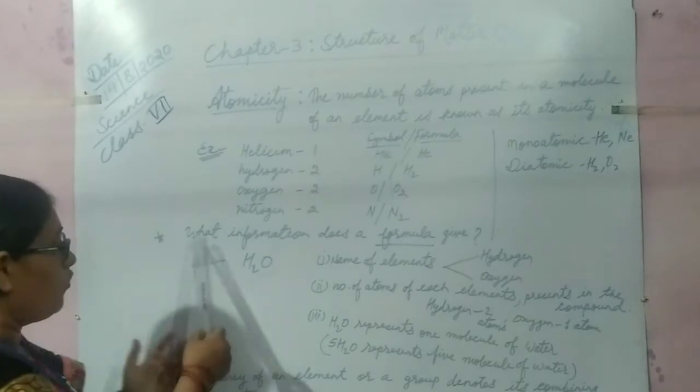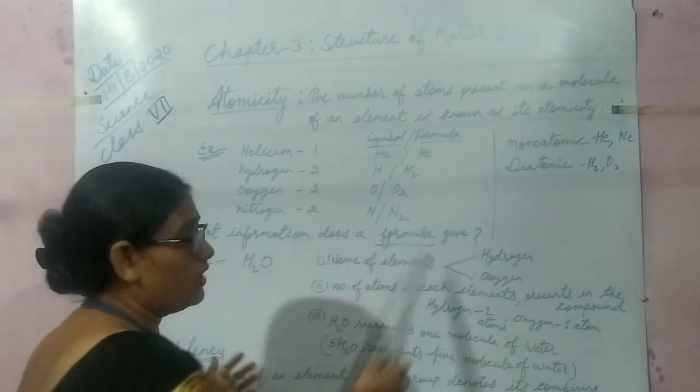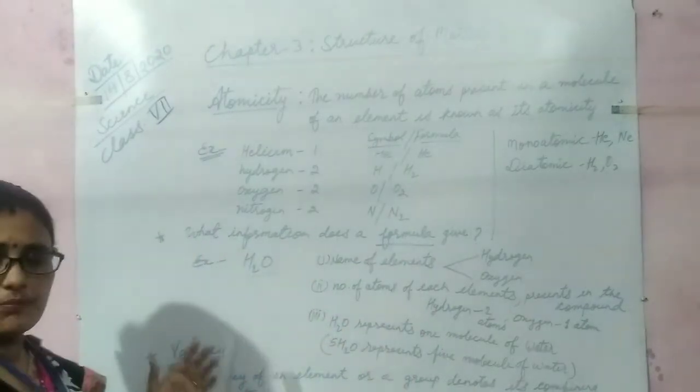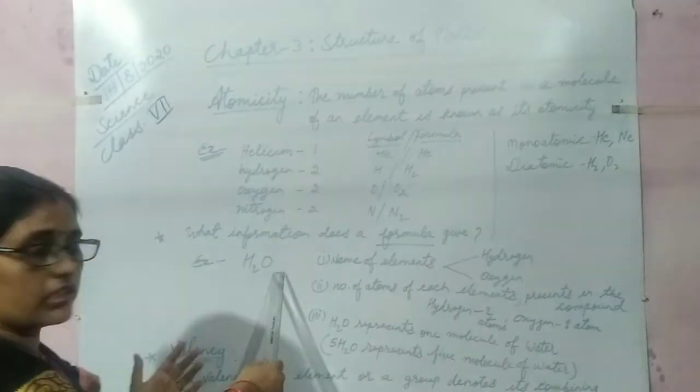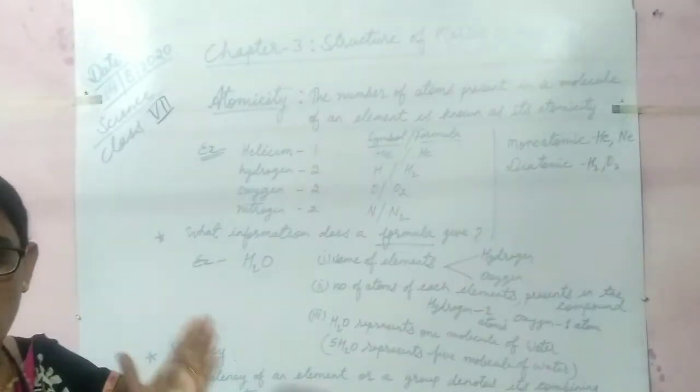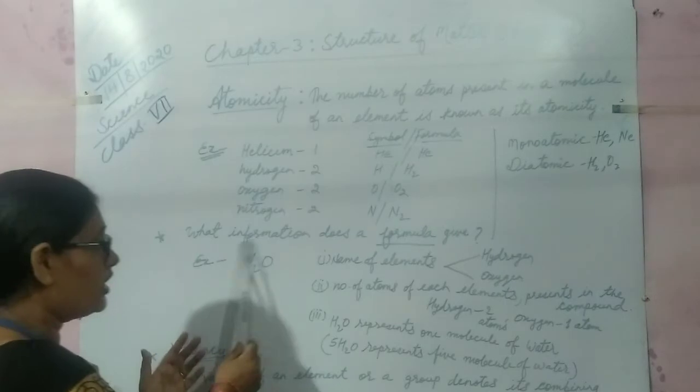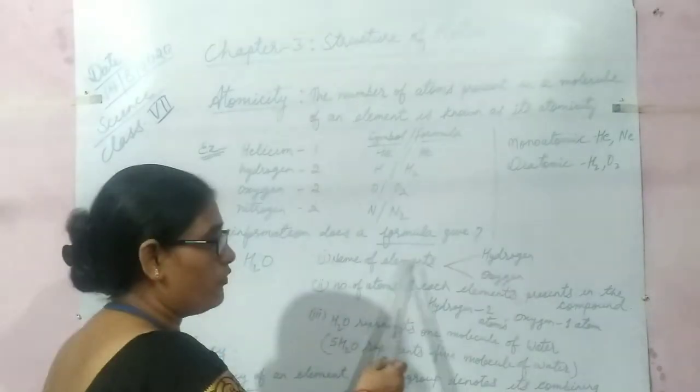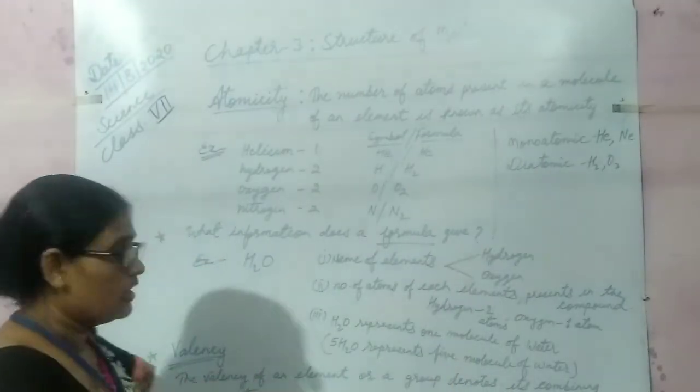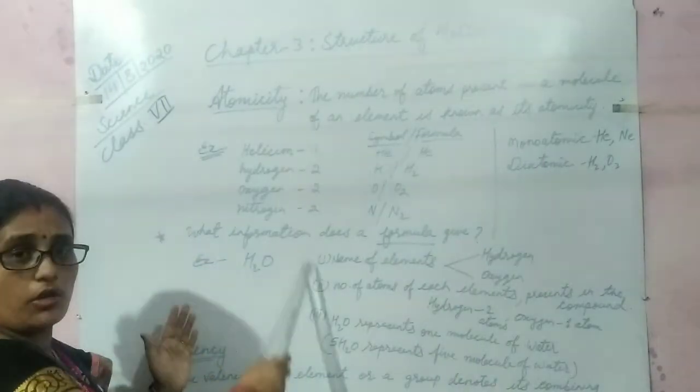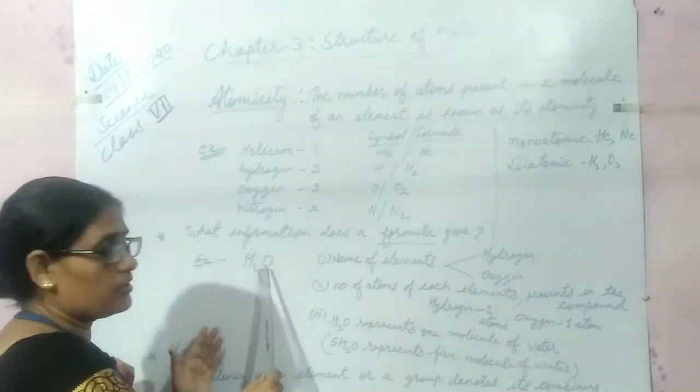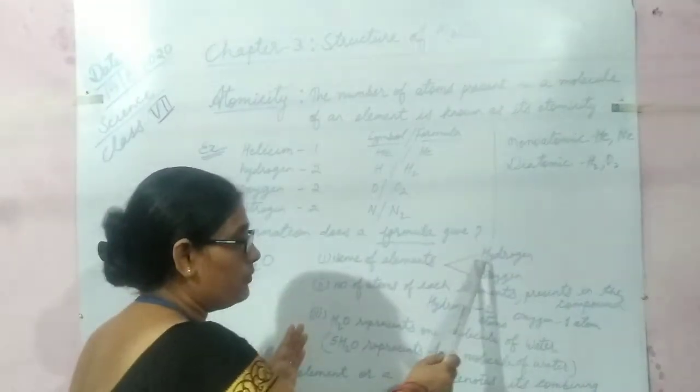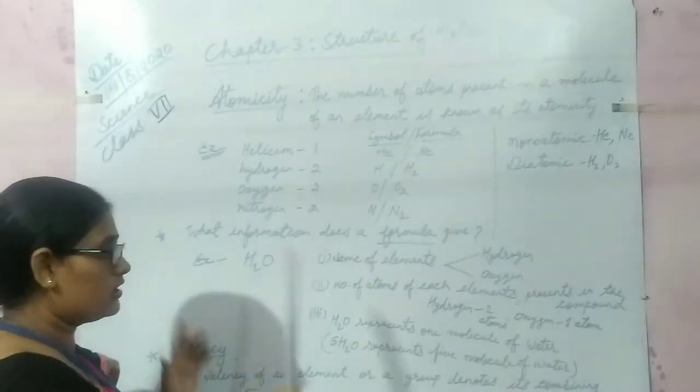Let us move to the next topic. What information does a formula give? For example, water H2O. What information do we get from this formula? Number one: the name of elements, hydrogen and oxygen. This formula H2O shows the type of elements found in this formula.